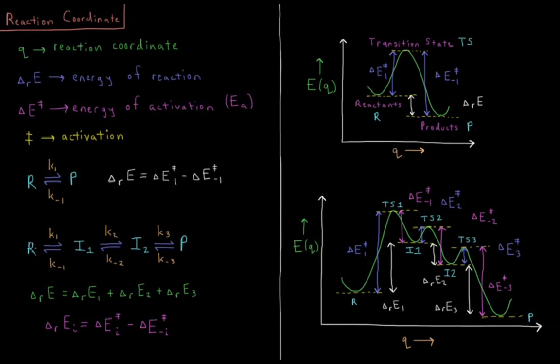Alternatively, what we could have is this kind of situation where we have three distinct steps as we go. The first one, we have R which undergoes a reaction to form intermediate 1, I1, with a rate constant of K1.